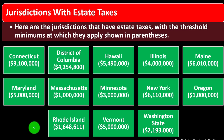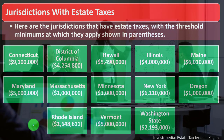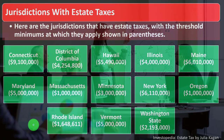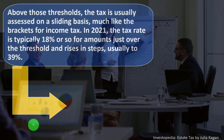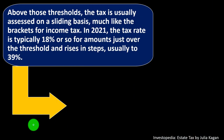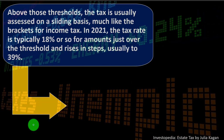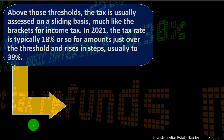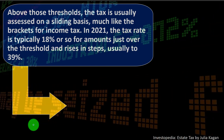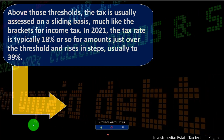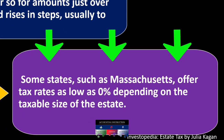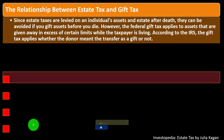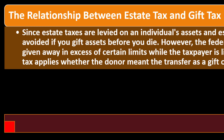Above those state thresholds the tax is usually assessed on a sliding basis, much like income tax brackets. In 2021, the tax is typically around 18% for amounts just over the threshold and rises in steps usually to 39%. These exemption amounts are similar to the standard deduction for income taxes — the amount over the exemption is potentially subject to taxation, with a progressive system where lower asset values are taxed at lower rates and higher estate values at higher rates.